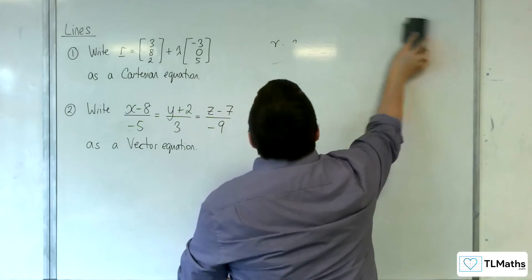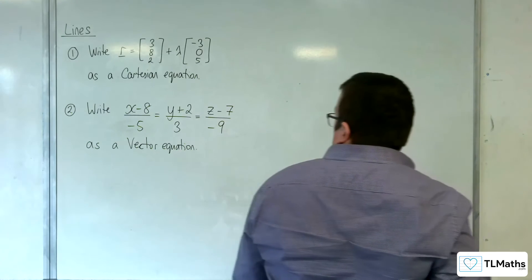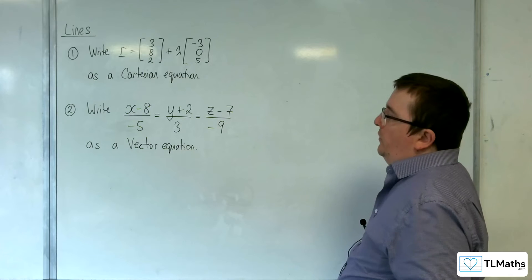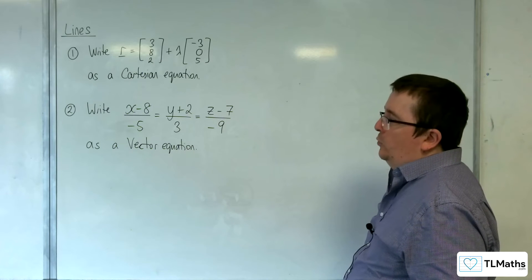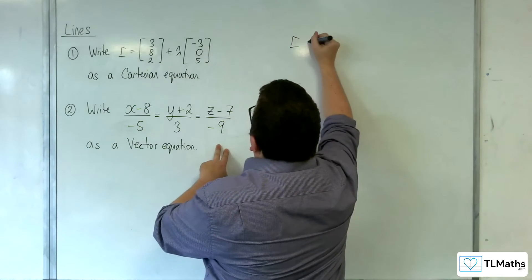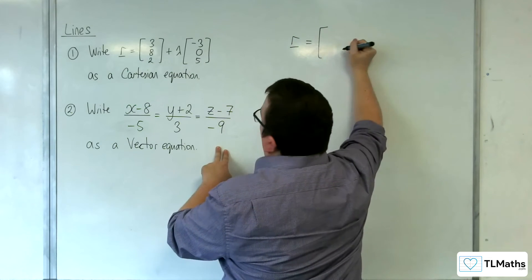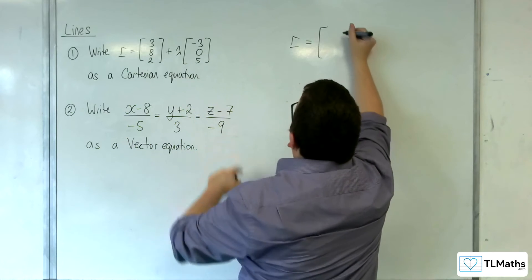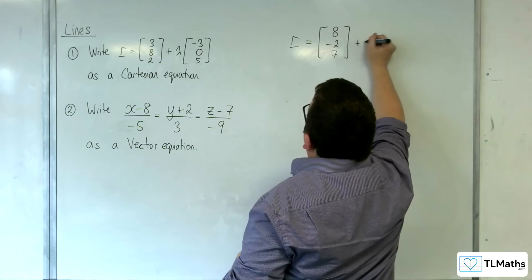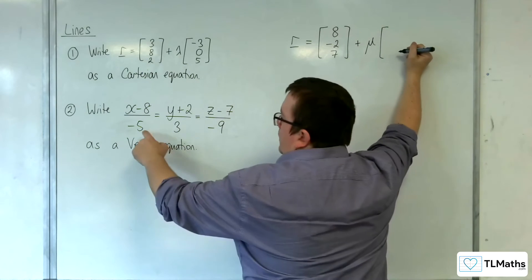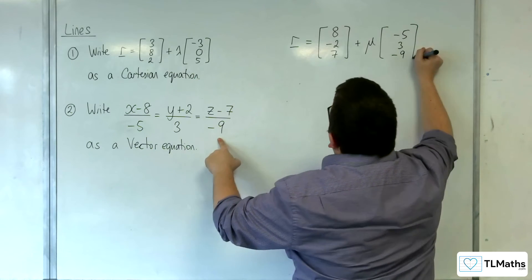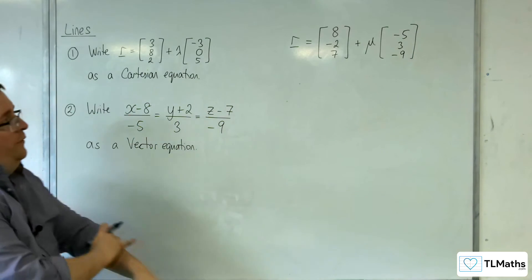Okay, so let's take a look at number 2. So write x take away 8 over minus 5 equals y plus 2 over 3 equals z take away 7 over minus 9 as a vector equation. So what we want to be able to do is go directly to the answer if we can. So r is going to be equal to 8 minus 2, 7 plus, I'll use mu minus 5, 3 minus 9. Okay, so going directly to that form.